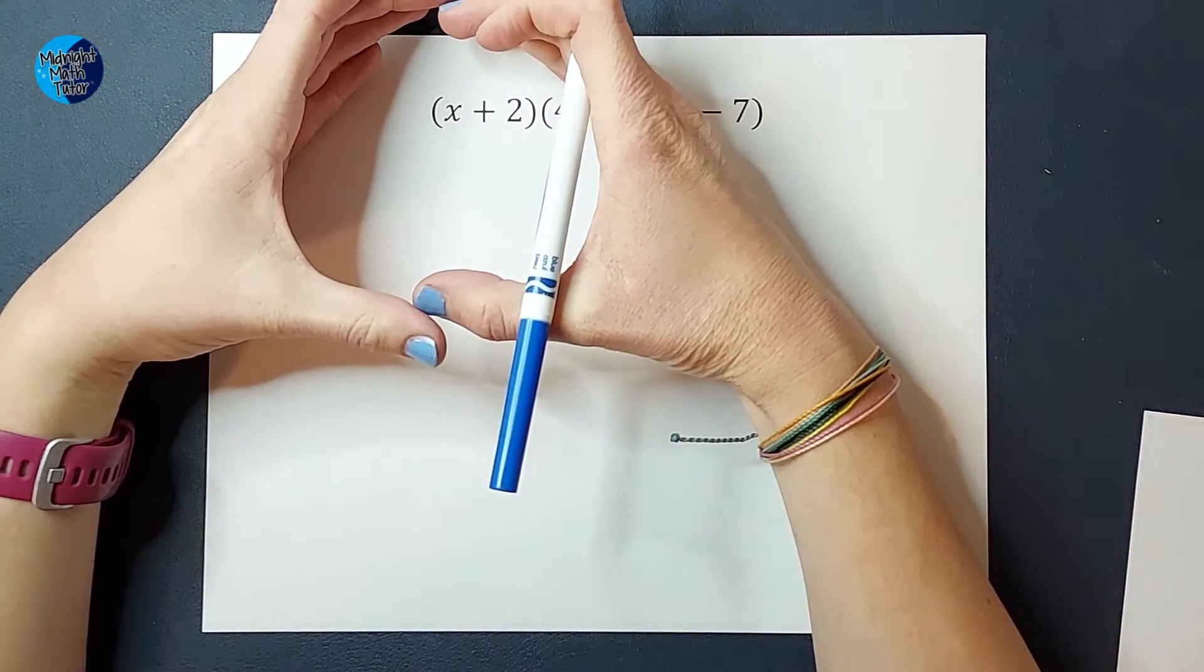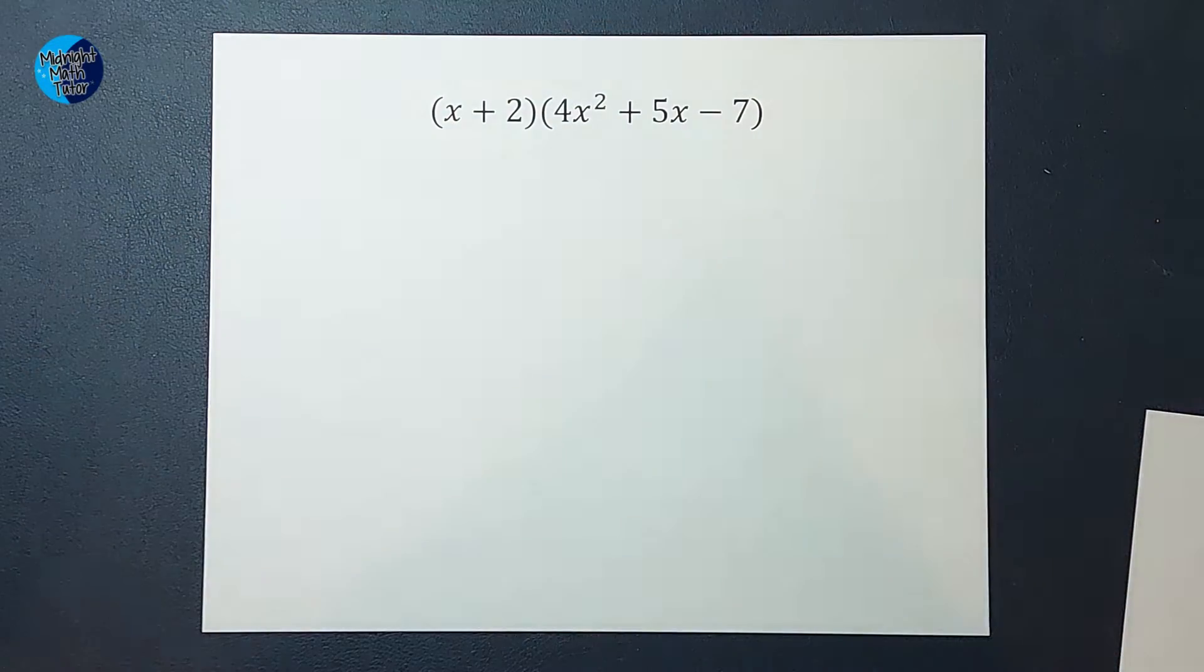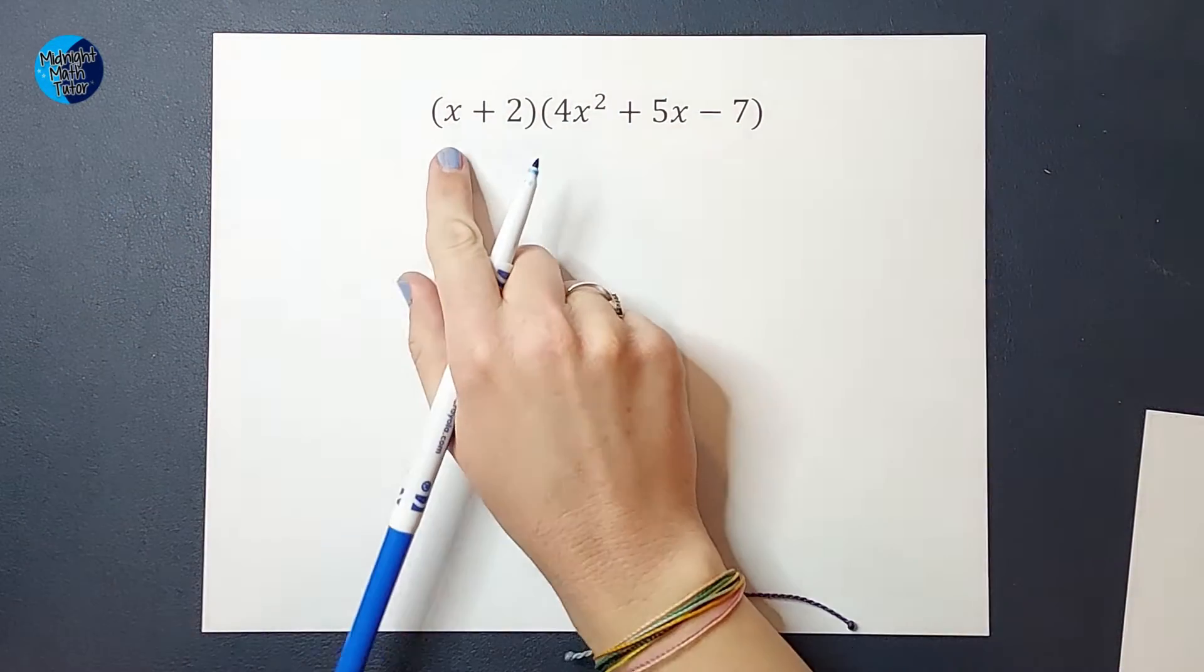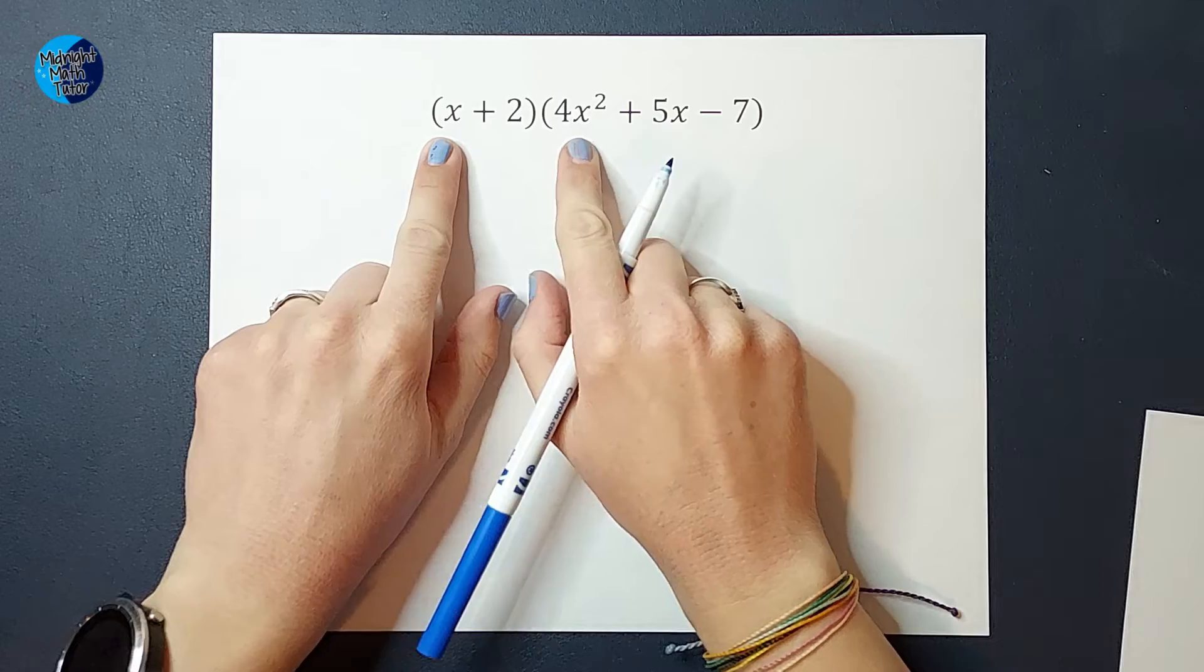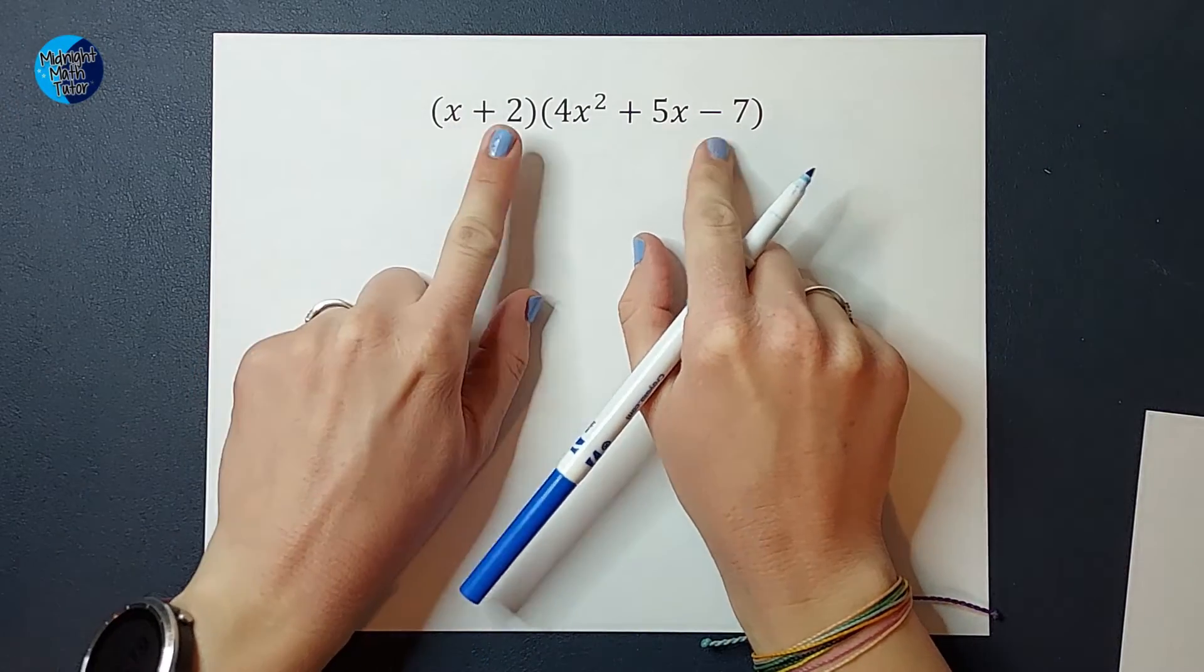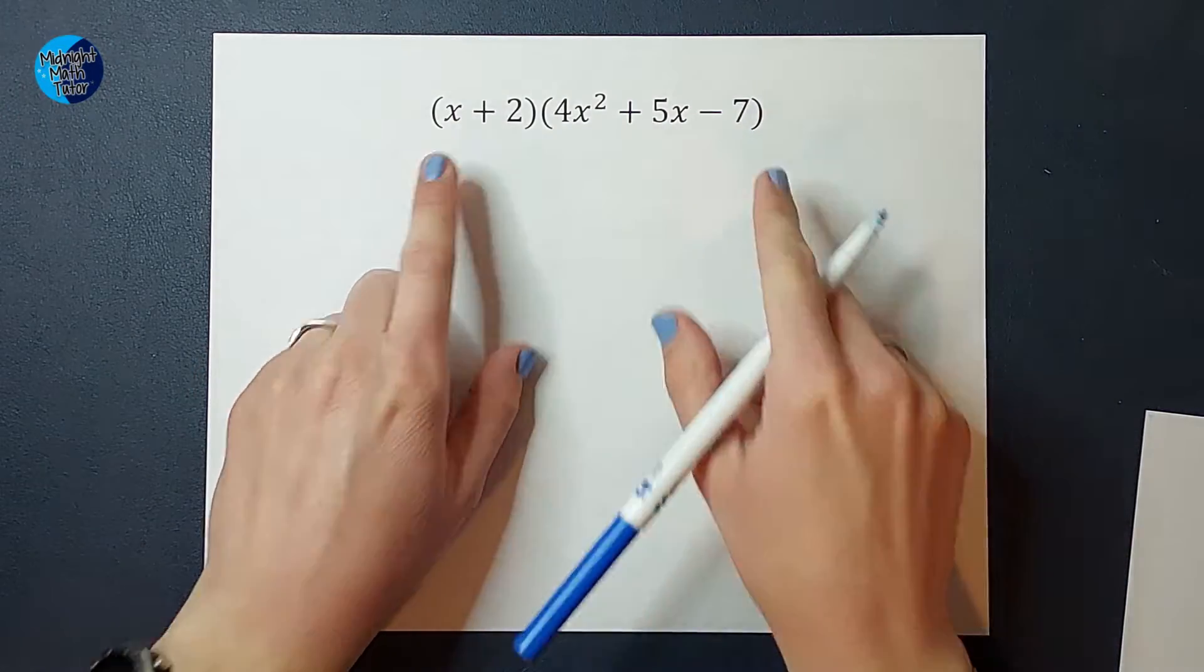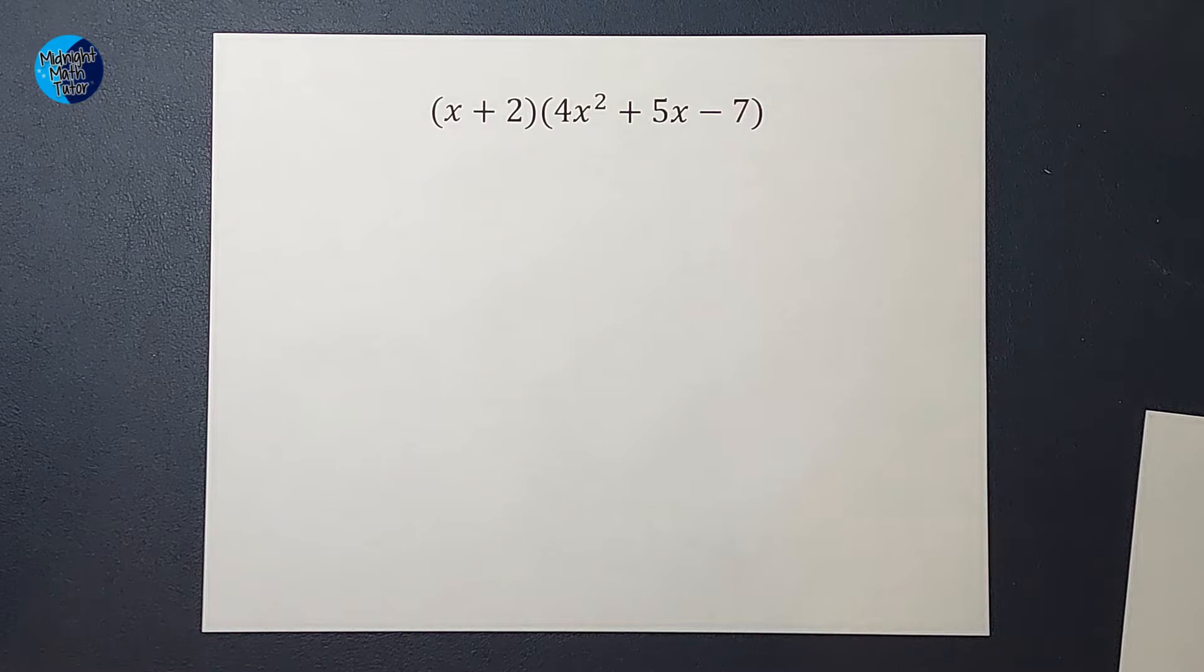So I am multiplying this parentheses times this parentheses. I need to make sure that this x gets multiplied to each of these terms. Same with the two. It needs to be multiplied to each one.